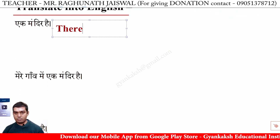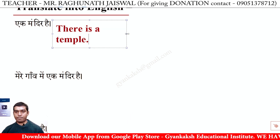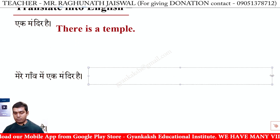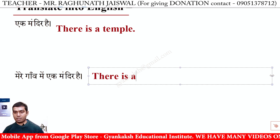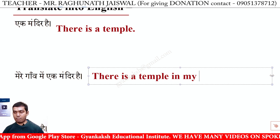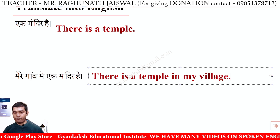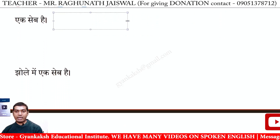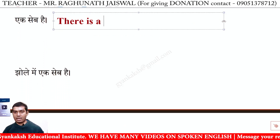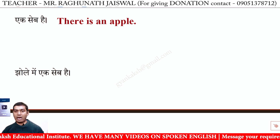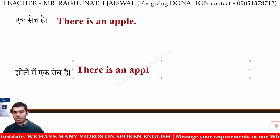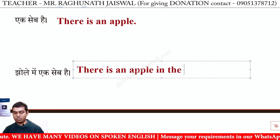Aek mandir hai — There is a temple. Mere gao mein ek mandir hai — There is a temple in my village. Aek seb hai — There is an apple. Jholi mein ek seb hai — There is an apple in the bag.